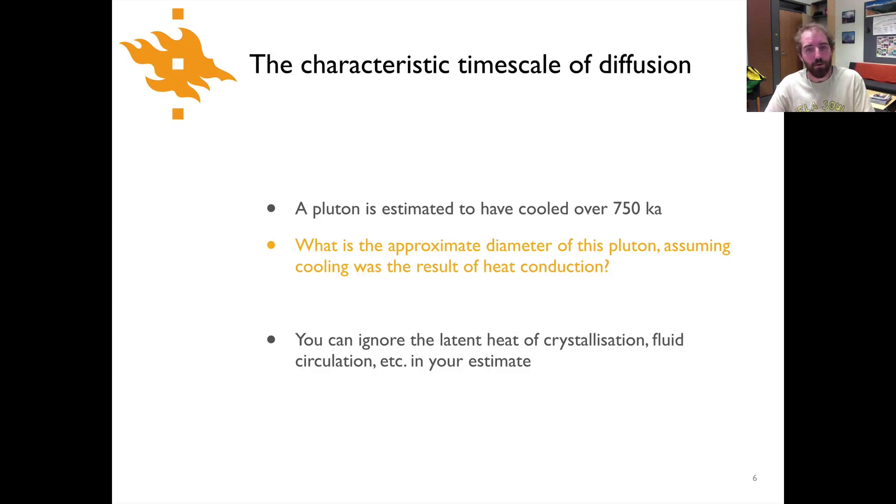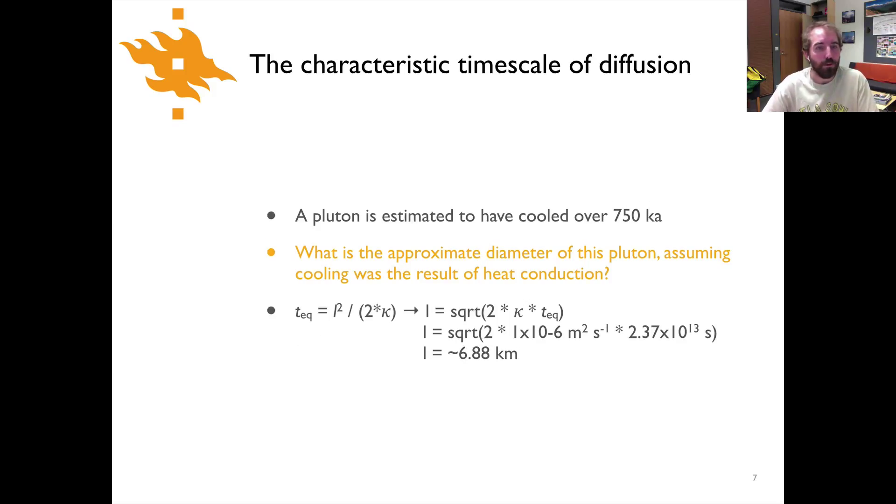So what did you come up with for the size of this pluton? Hopefully you've done something like this. We have our equation for the characteristic time shown here and you can simply rearrange that equation to solve for the length scale. In this case it's simply going to be 2 times kappa times the characteristic time, which we have, and then you take the square root of that to find the length scale. If you plug in the numbers you'll come up with something like 6.88 kilometers. And if you go back to the table earlier in the lecture you should see that falls right in the approximate place where you would expect it to be.